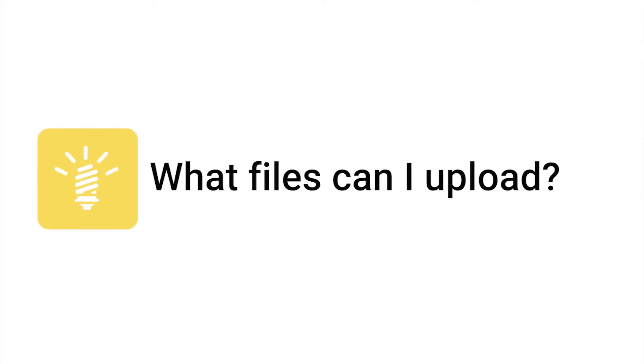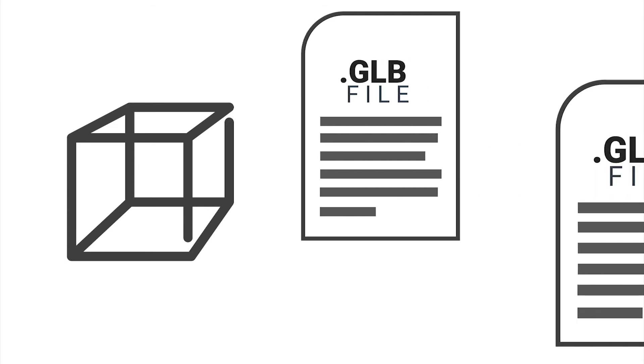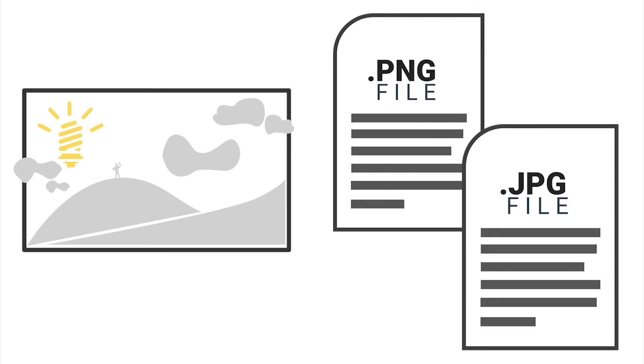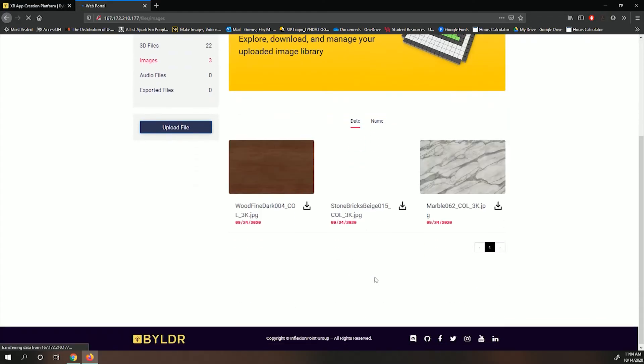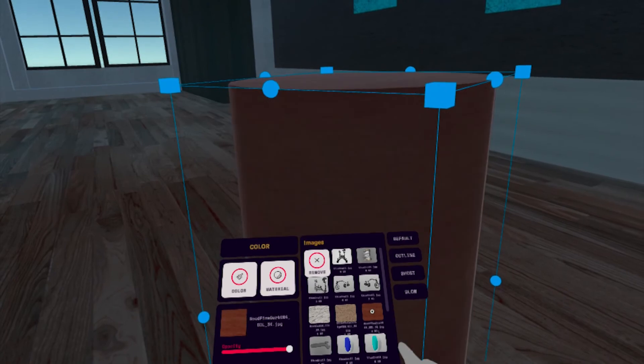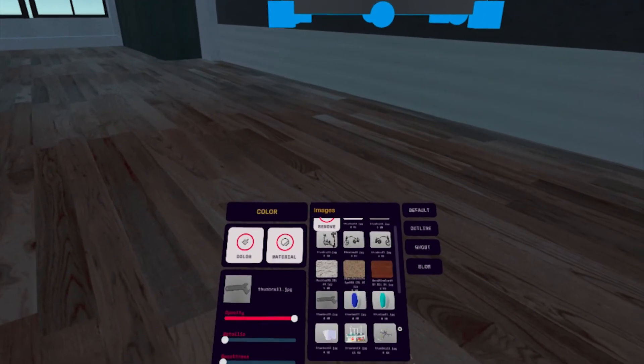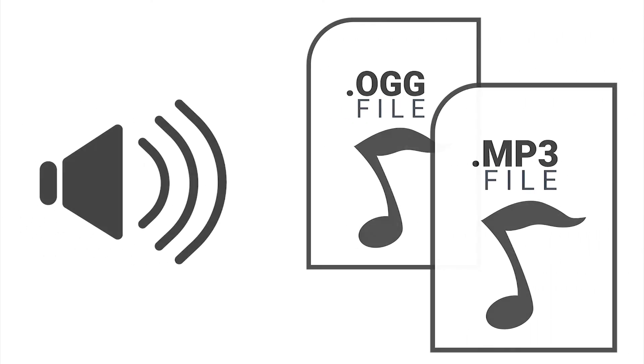Here is a quick breakdown of the different types of files you can upload. In 3D assets, you can upload .glb files and .gltf files. For images, you can upload .png and .jpg files. You can upload images to use as textures on 3D models, but also to use them as an object to create triggers or actions with. For audio files, you can upload .mp3 and .ogg audio files.